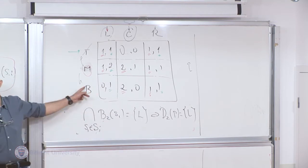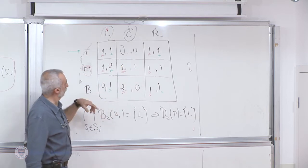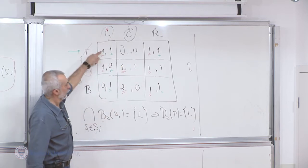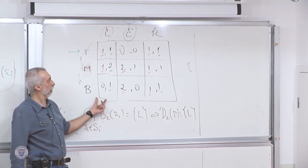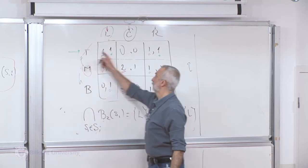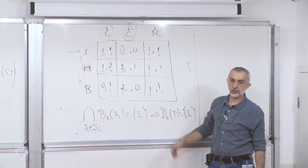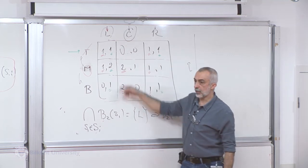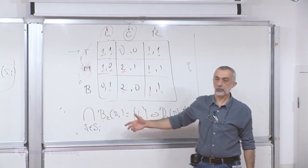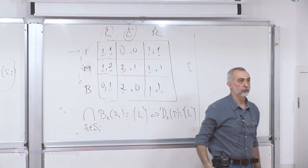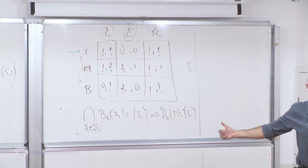This makes life quite easy. In the table, go over each column and mark the numbers which are highest in that column — that gives you the best responses of player 1. Over each row, mark the highest payoffs of player 2 — that gives you the best responses of player 2. If there is a single column in which every second number is marked, then that strategy is a dominant strategy of player 2. Life becomes very easy, thanks to best responses.